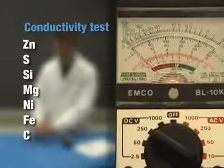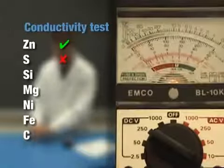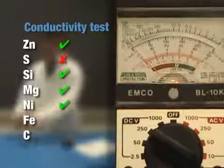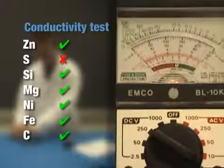Using a multimeter, verify if each substance conducts electricity. If the needle moves, then the substance is a conductor. Make sure to record your results.